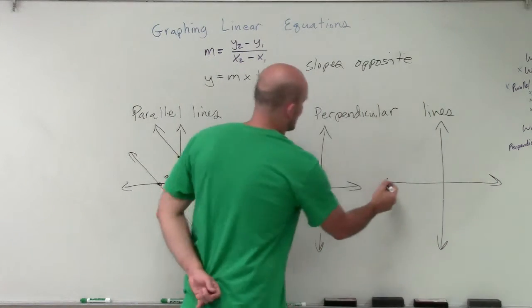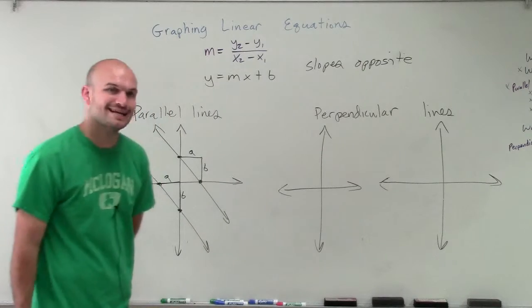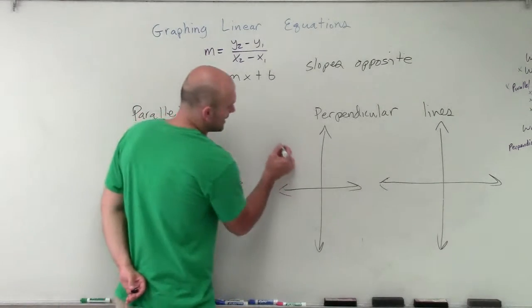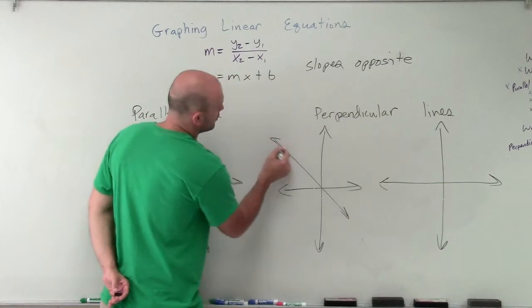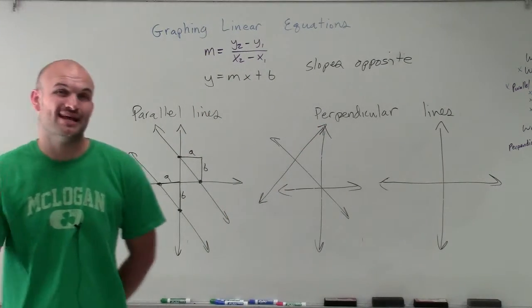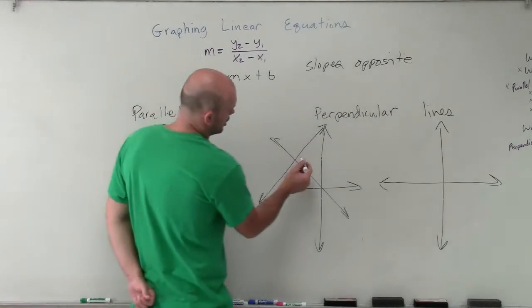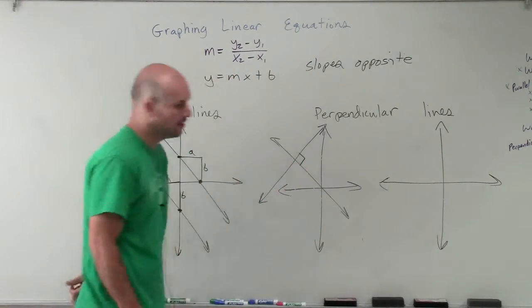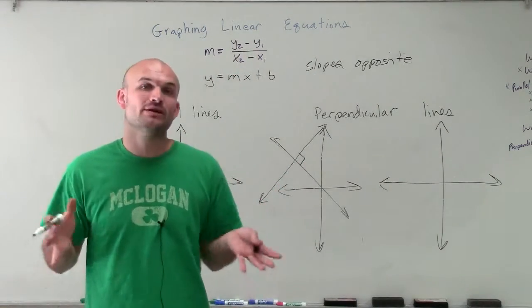So we know that parallel lines never, ever intersect. Perpendicular lines always, always intersect. And they don't just intersect at any angle. They intersect at an angle of what we call 90 degrees. And that's going to be true for all perpendicular lines.